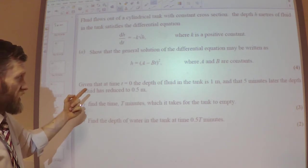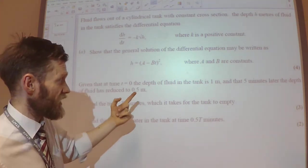Show that the general solution of the differential equation may be written as H equals A minus BT all squared. Given that, given the time T equals 0, the depth of the fluid in the tank is 1 meter.